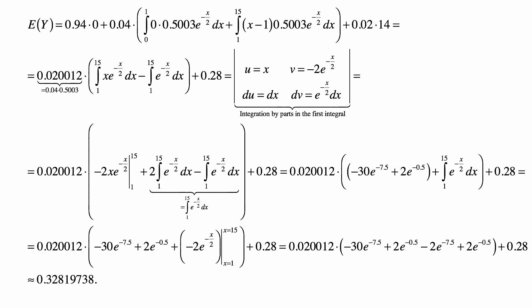which is just u times v, minus minus, so plus 2 integrals from 1 to 15 of e to the minus X over 2 dX. And then the last piece from the previous expression, the second integral in parentheses, is integral from 1 to 15 of e to the minus X over 2 dX.